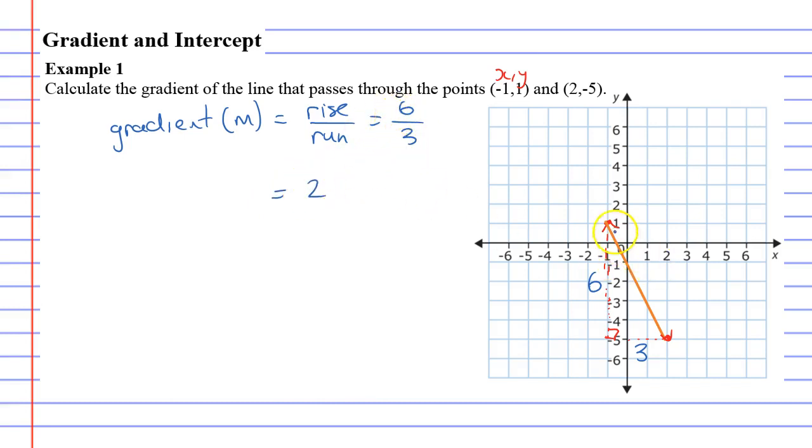6 divided by 3 is 2. Now we just need to do the running man. The running man starts on the left-hand side, and you'll notice he's running downhill, which means our gradient is negative.